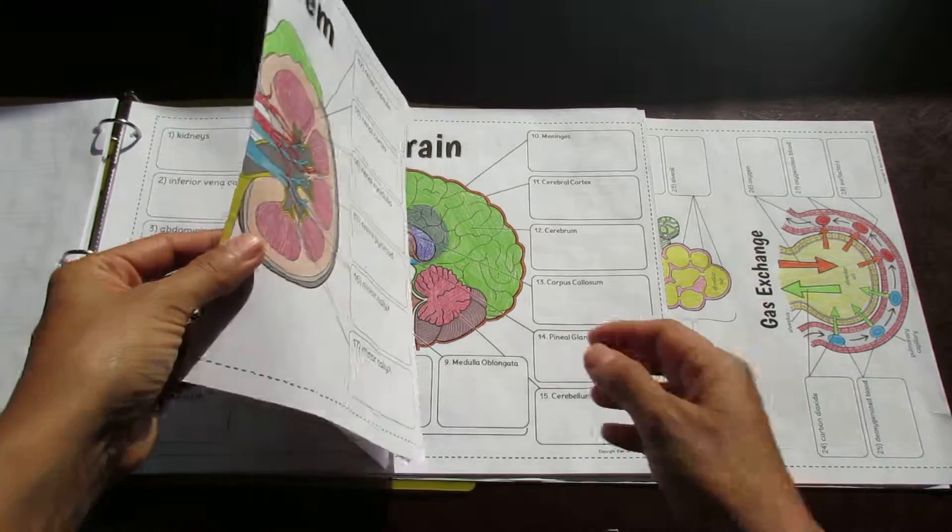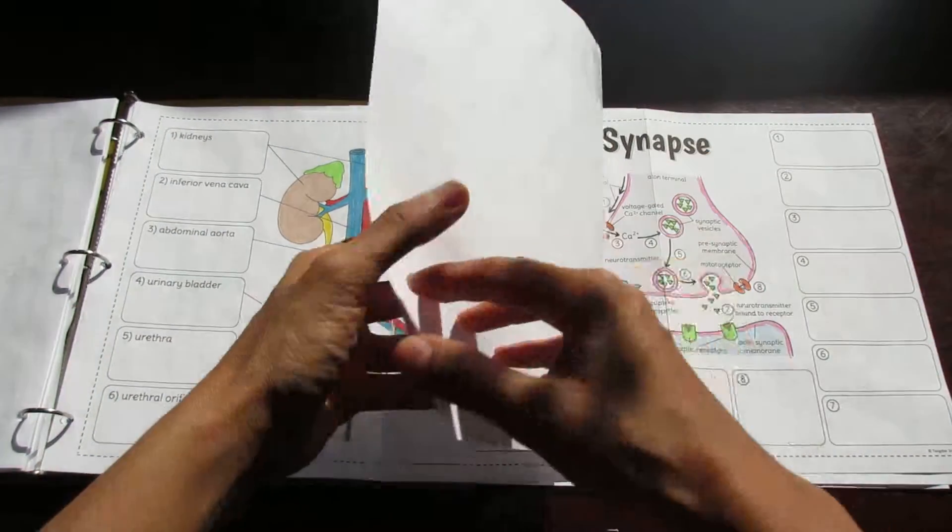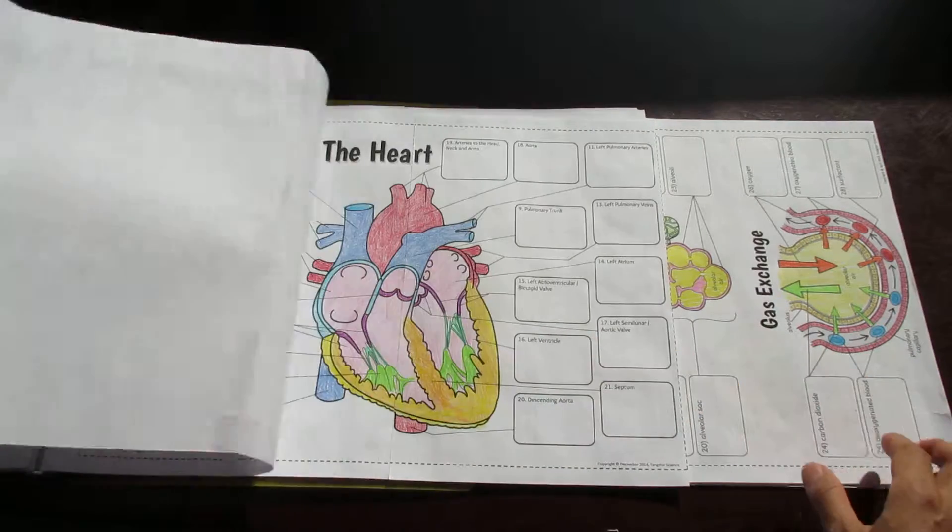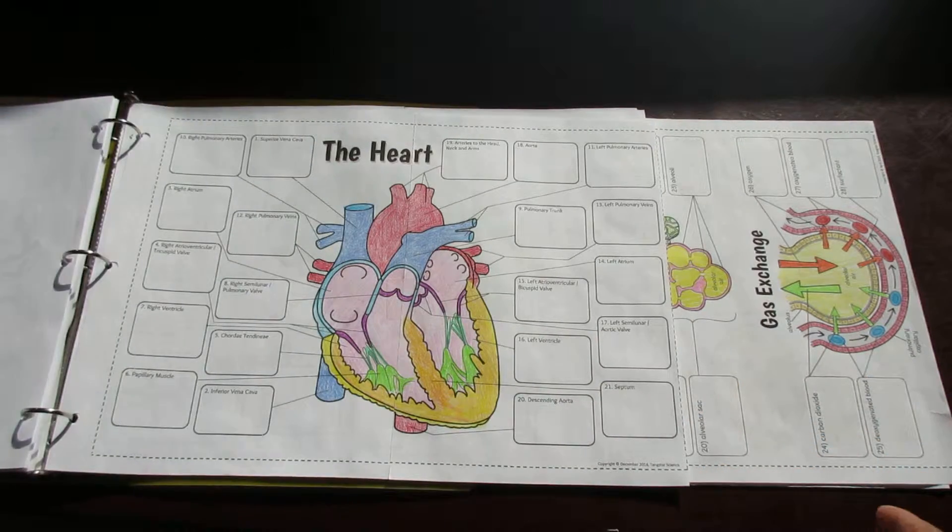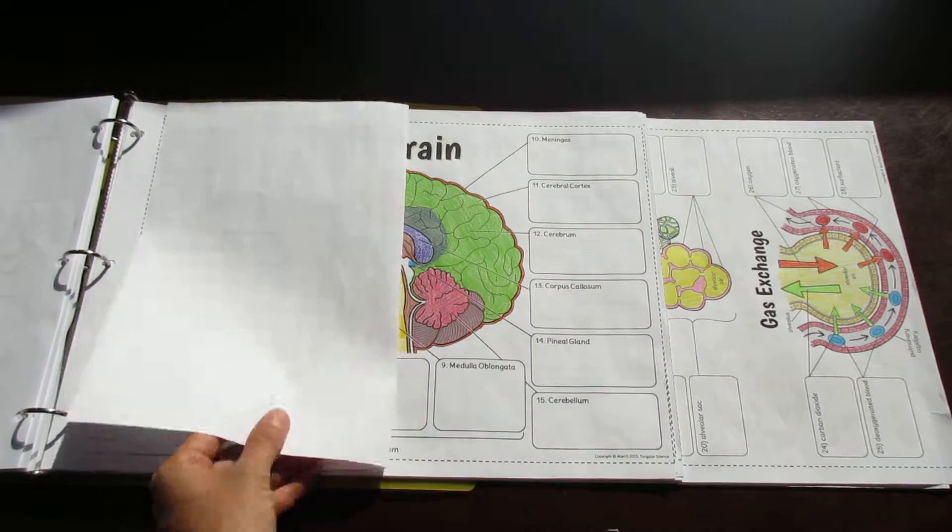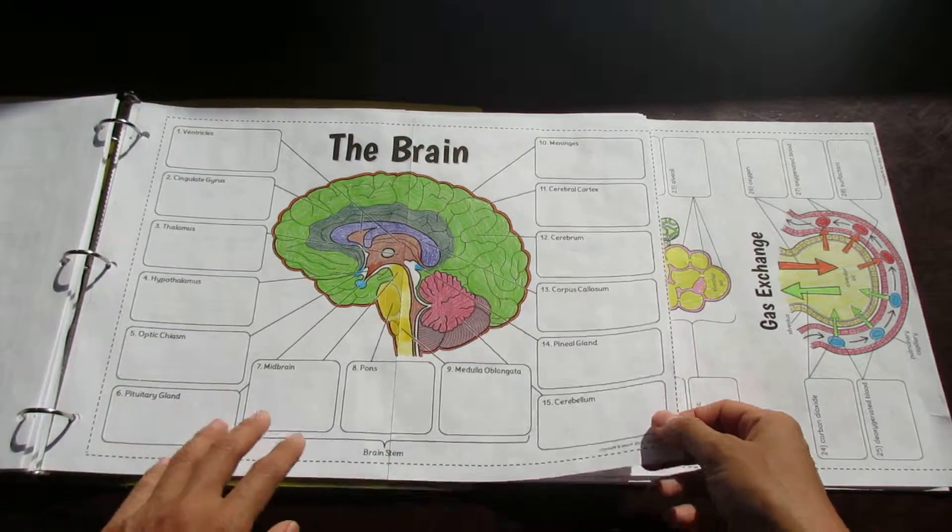Here we have the urinary system and we have the neuron and the synapse and then we go to some two-page foldables. This one's the heart so it folds like this and the brain actually contains three foldables. This one is the cross-section of the brain.